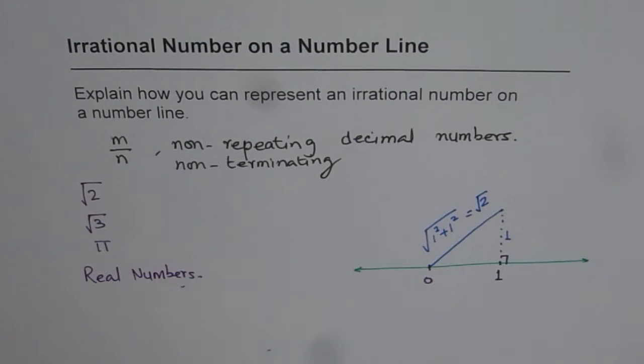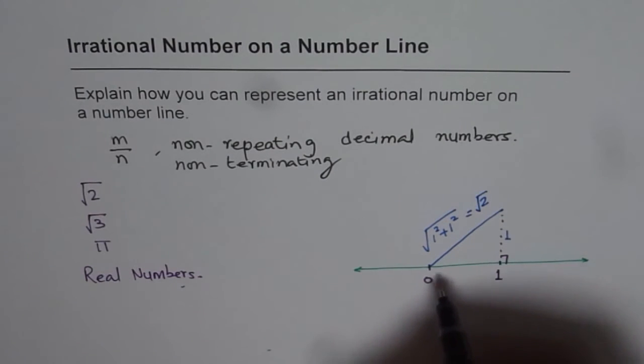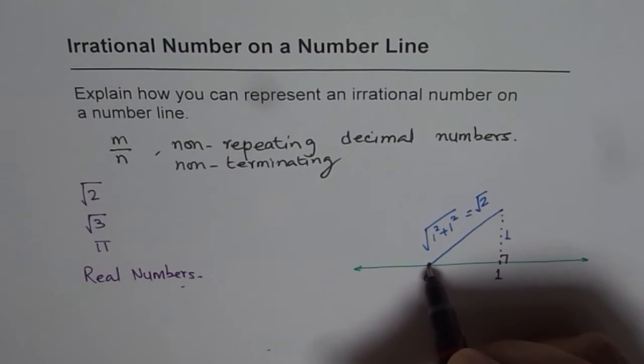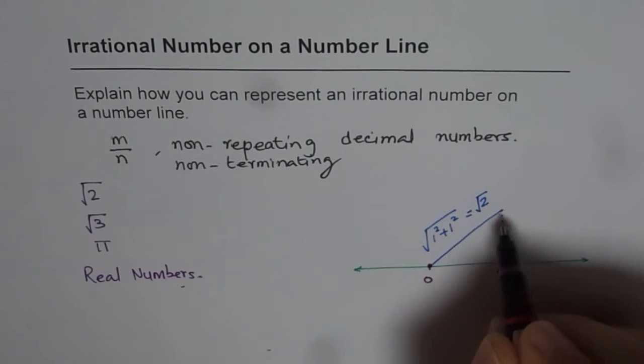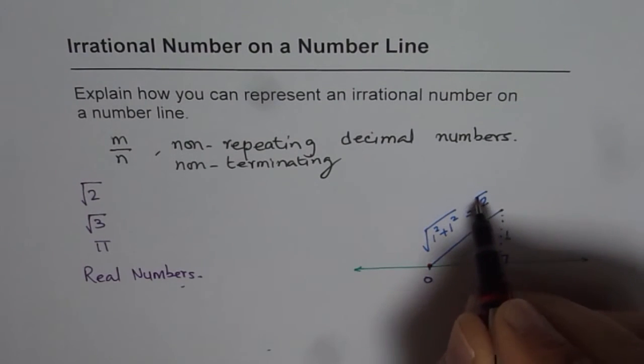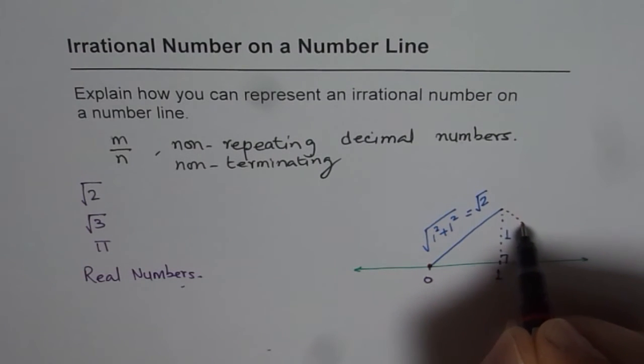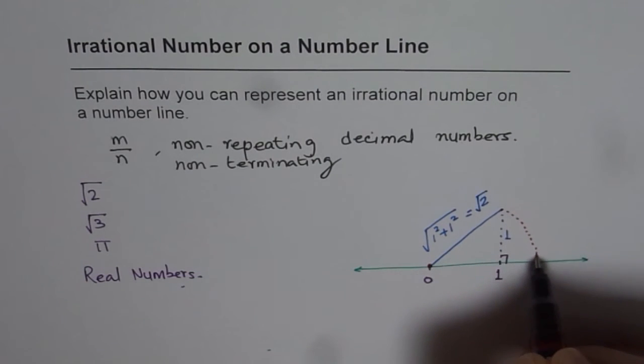Now, if you take a compass, and I am making a rough sketch here, put one end on 0 and on the other end of the line segment, which represents square root of 2, then this arc represents square root 2 on the number line.